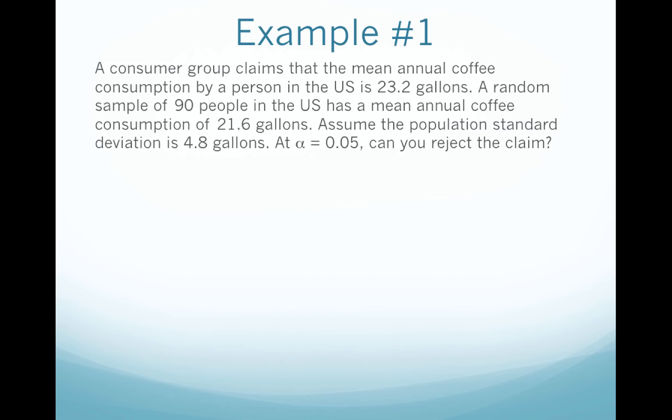Alright, let's do some examples. A consumer group claims that the mean annual coffee consumption by a person in the U.S. is 23.2 gallons. A random sample of 90 people in the U.S. has a mean annual coffee consumption of 21.6 gallons. Assume the population standard deviation is 4.8 gallons. At alpha equals .05, can you reject the claim?